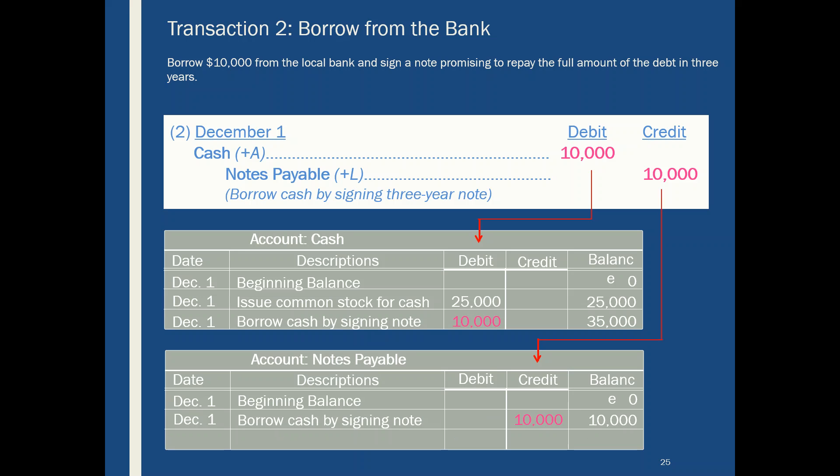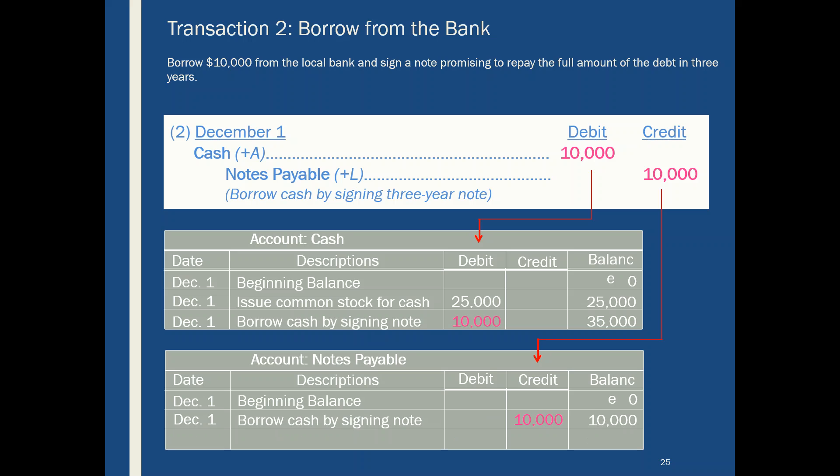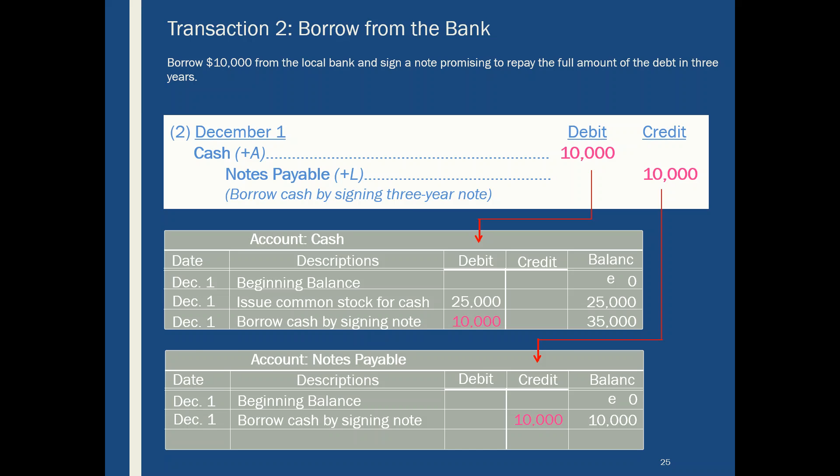One more example: notes payable for $10,000. There's an account ledger called notes payable, and we just keep track of everything in notes payable.